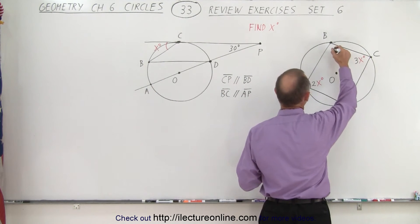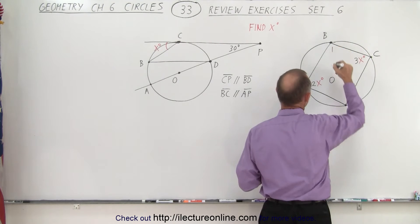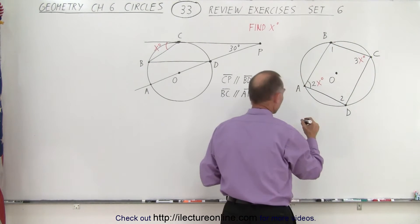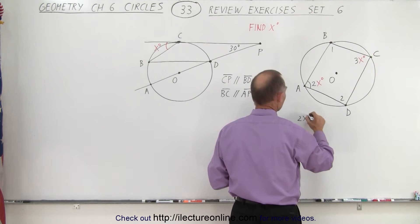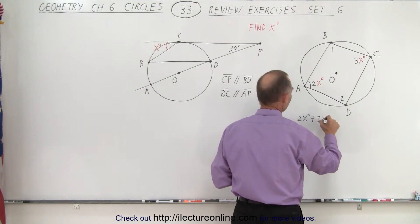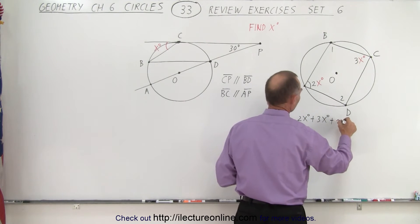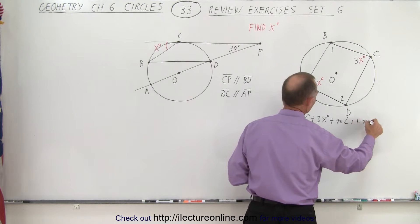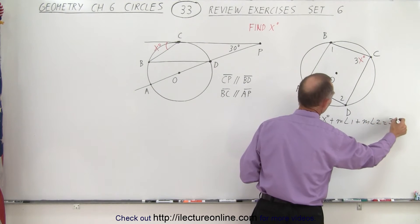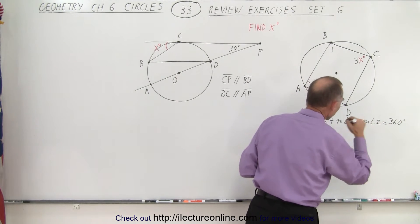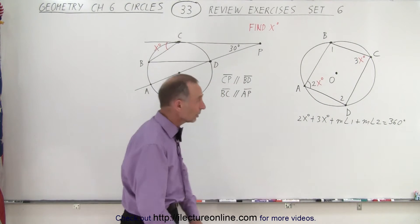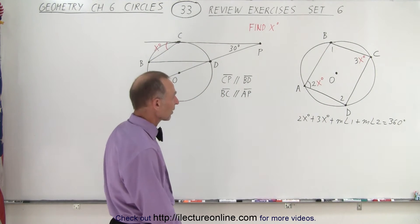Let's call this angle here angle one and let's call this angle two. So we do know that two times x degrees plus three times x degrees plus the measure of angle one plus the measure of angle two must add up to 360 degrees. But there's two unknowns there. We don't know either one, measure of angle one and measure of angle two.